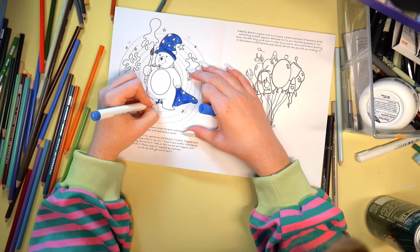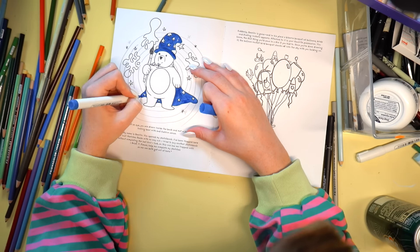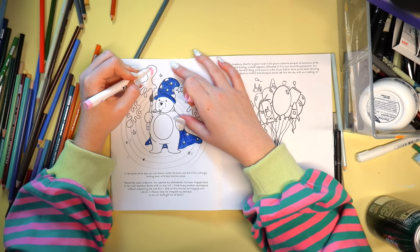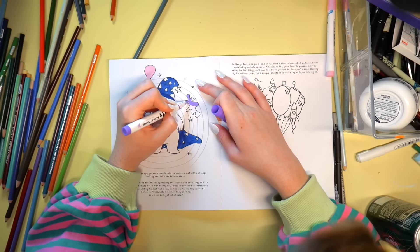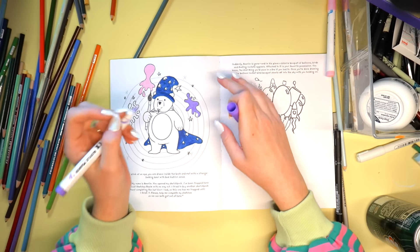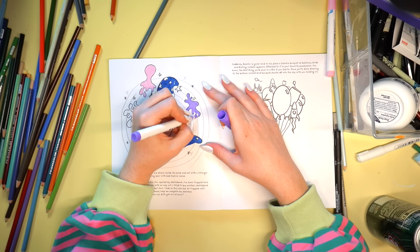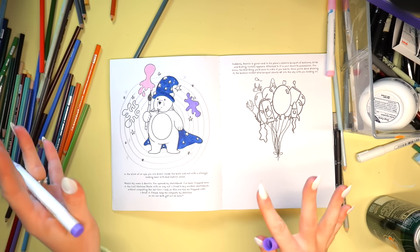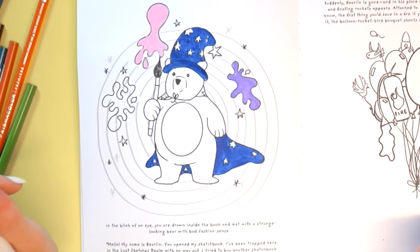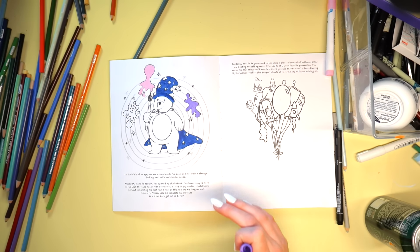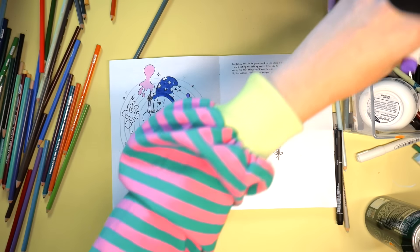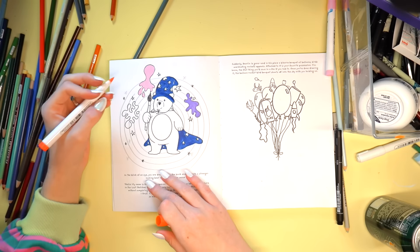So this is Berlin and in the blink of an eye you are drawn inside the book and met with a strange looking bear with bad fashion sense. Hello, my name is Berlin. Not like Berlin. It's like Berlin. Bear-lin. And I am just gonna go ahead and color in his little hat and his cape. You opened my sketchbook. I've been trapped here in the lost sketches realm with no way out. I tried to buy another sketchbook without completing the last four I had. So this one has me trapped until I finish it. Please help me complete my sketches so we can both get out of here.